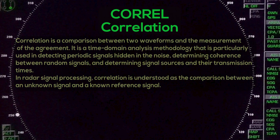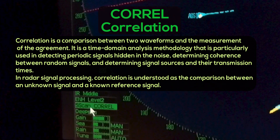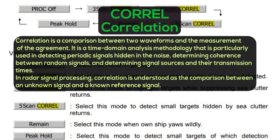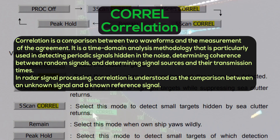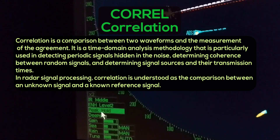Correlation: A comparison between two waveforms and the measurement of the agreement. It is a time-domain analysis methodology particularly used in detecting periodic signals hidden in noise, determining coherence between random signals, and determining signal sources and their transmission times. In radar signal processing, correlation is understood as the comparison between an unknown signal and a known reference signal.